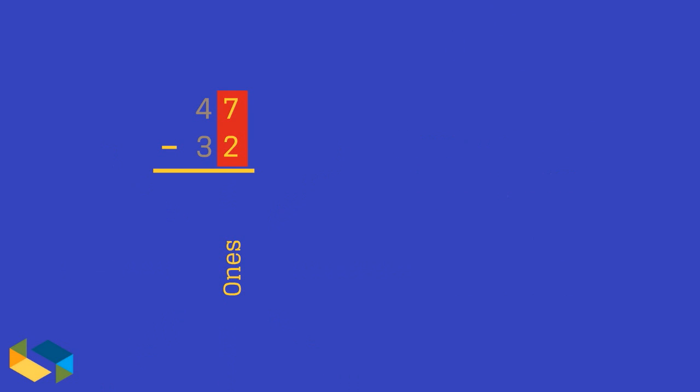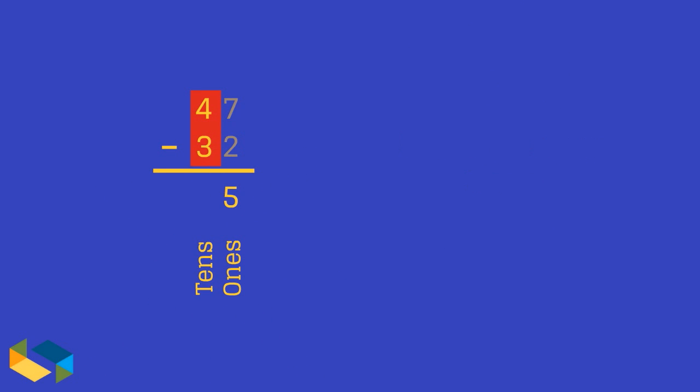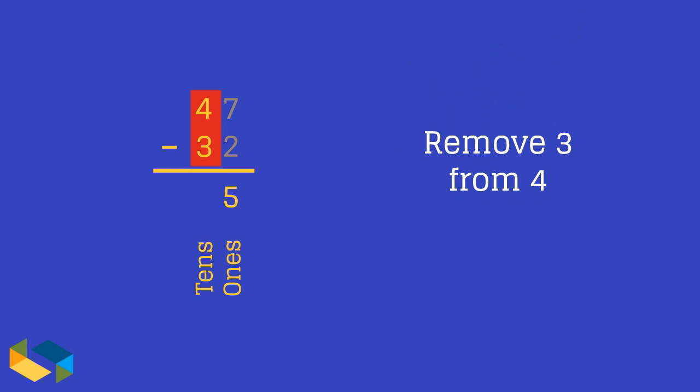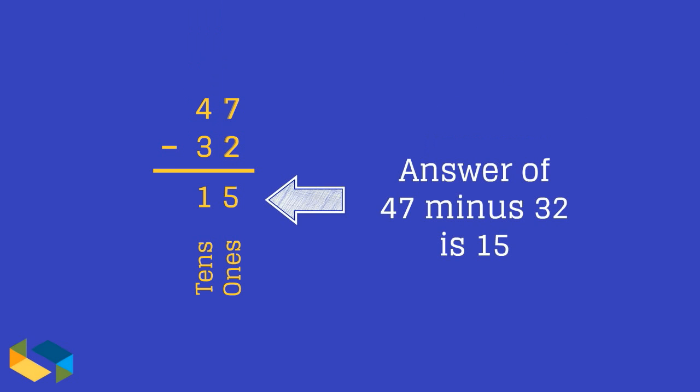Which means to remove two from seven. The answer for the ones place is five. Now we move to the tens place where we have to remove three from four. The answer, of course, is one. So the answer of 47 minus 32 is 15.